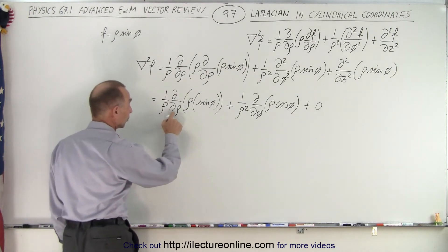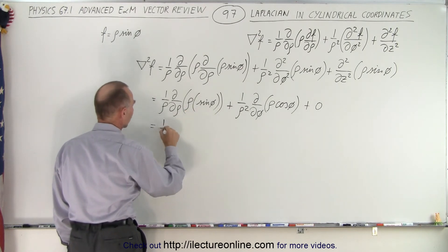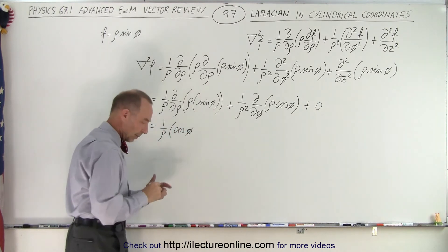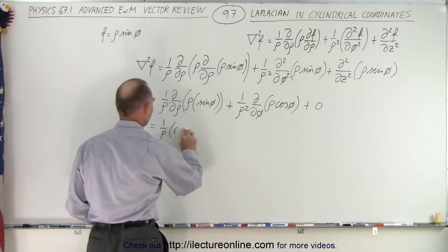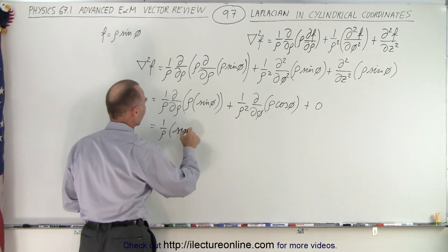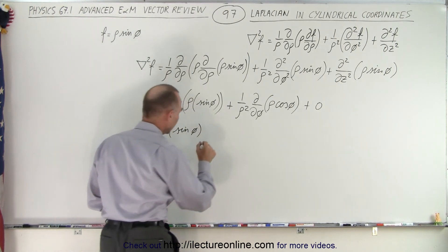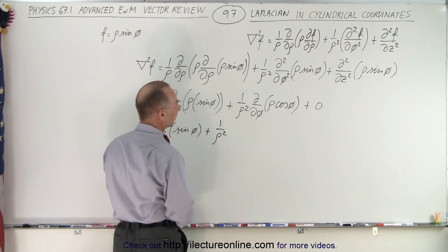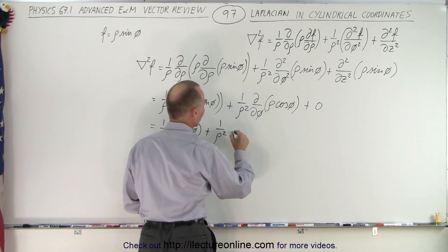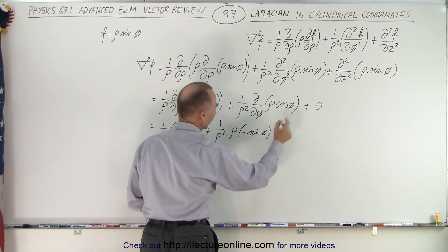Now let's take the partial derivative of this. Rho is the variable, sine of phi is the constant, so we get 1 over rho times sine of phi. Plus 1 over rho squared times the partial derivative with respect to phi: rho is constant, so we get rho times the derivative of cosine of phi, which is minus sine of phi. And of course the third term remains 0.